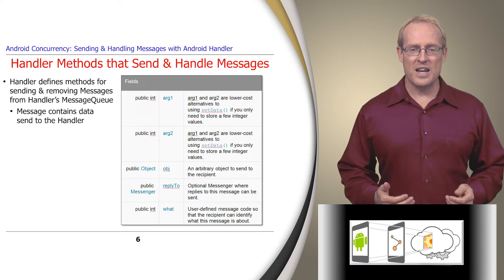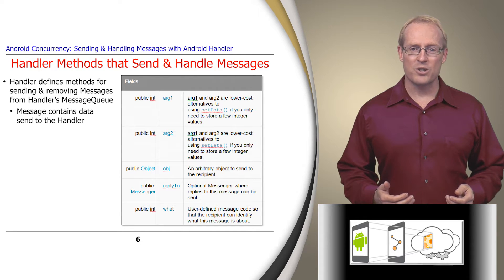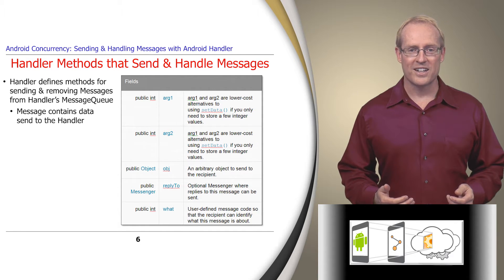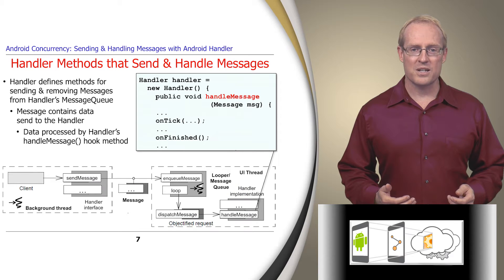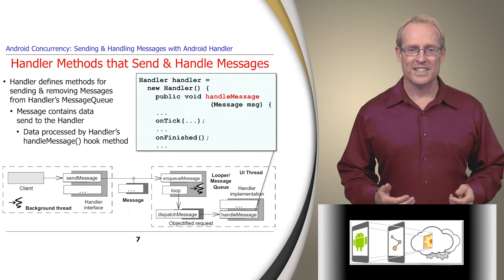This data contains a user-defined code that recipients can use to identify what the message is about, as well as several integer fields and an arbitrary object sent to the handler. This data will subsequently be processed by the handler's handleMessage hook method, which developers must override by extending the handler class.